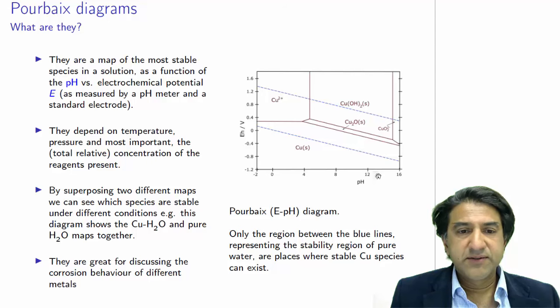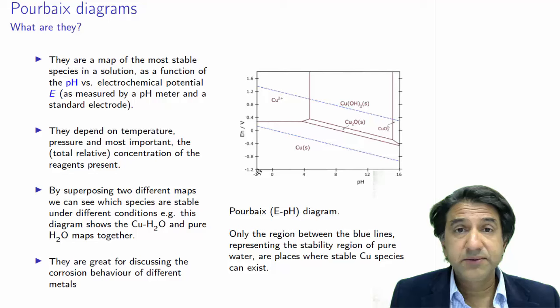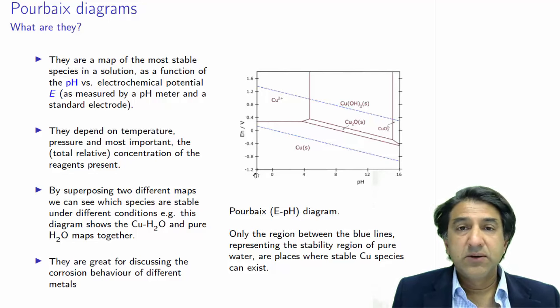So we can obviously adjust the pH of a solution by adding strong acids and bases. Likewise, we can also adjust the electrochemical potential of a solution by adding strong oxidizing or reducing agents. Or even more simply by just putting an electrode in the solution and dialing up a particular voltage that we want.